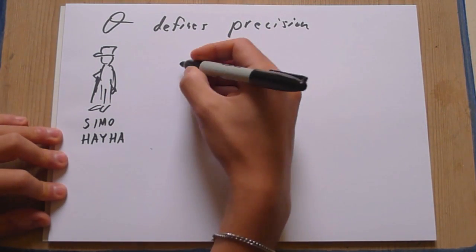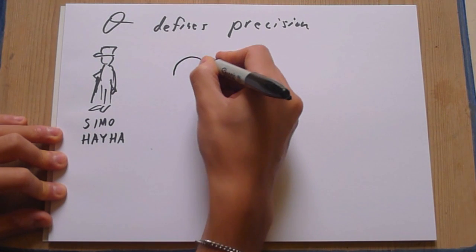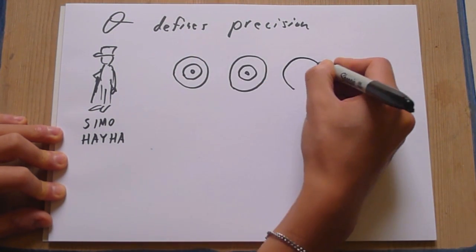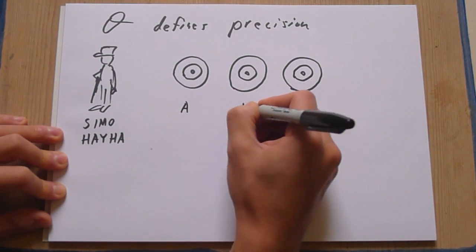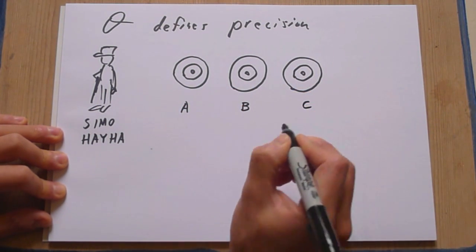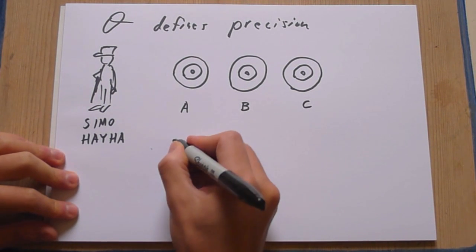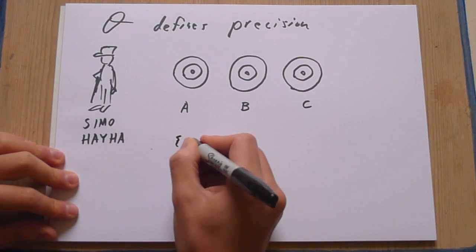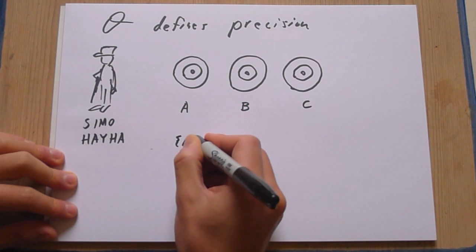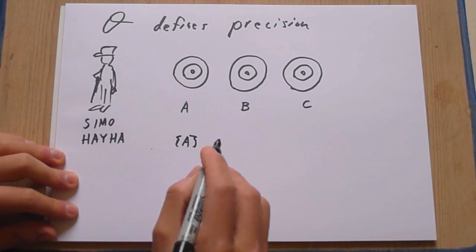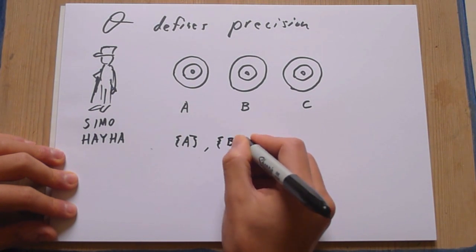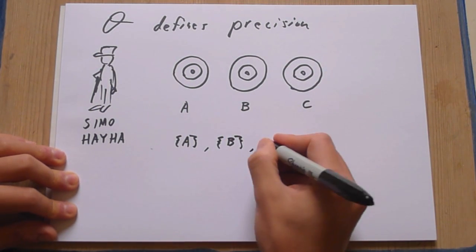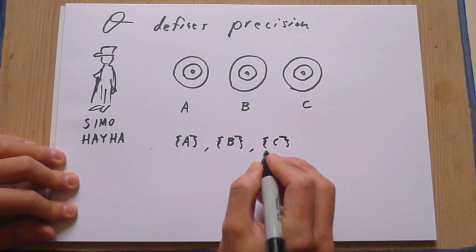Let's say you give him three targets here. Okay, let's call the targets A, B, and C. Ask him to aim at A. He will hit. And you give him 100 bullets. He will hit all 100 bullets at A. Ask him to aim at B. You give him 100 bullets. He will hit all 100 bullets at B. Ask him to aim at C. It's no problem. All 100 bullets hit C.